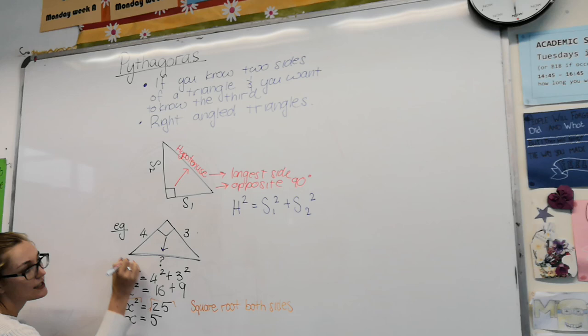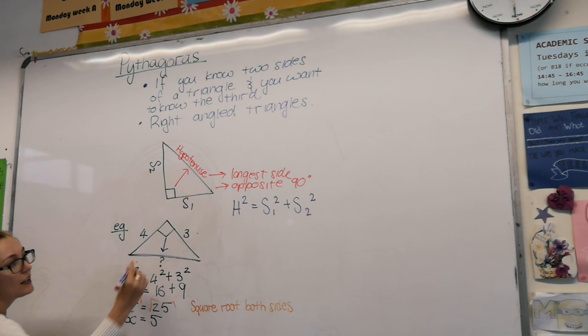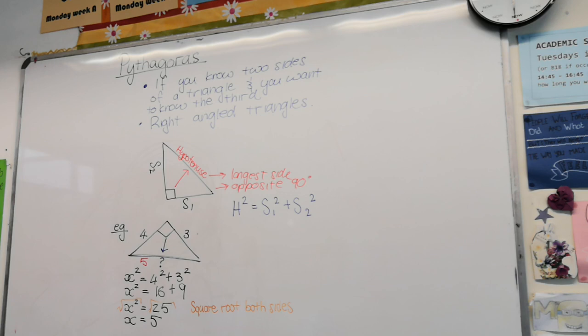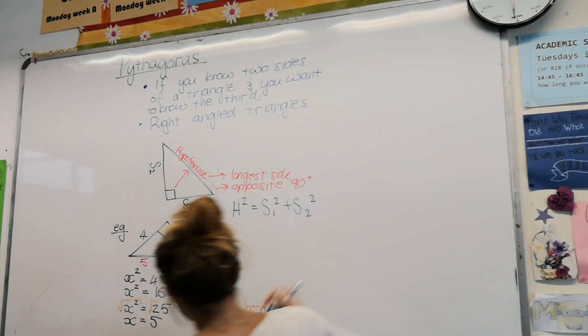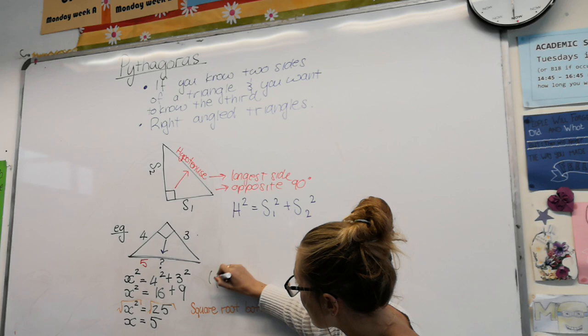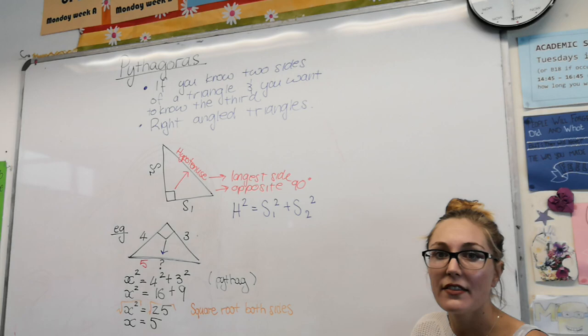So this tells us that the length of our hypotenuse here is, in fact, 5. And there's one more very important thing you need to do when you do a Pythagoras' question, and that is to include a reason. This is part of geometry. Always in geometry, you need a reason. Next to where you've made your first Pythagoras' statement, you're going to write in brackets your reason, which is Pythagoras'. And that's all there is to it.